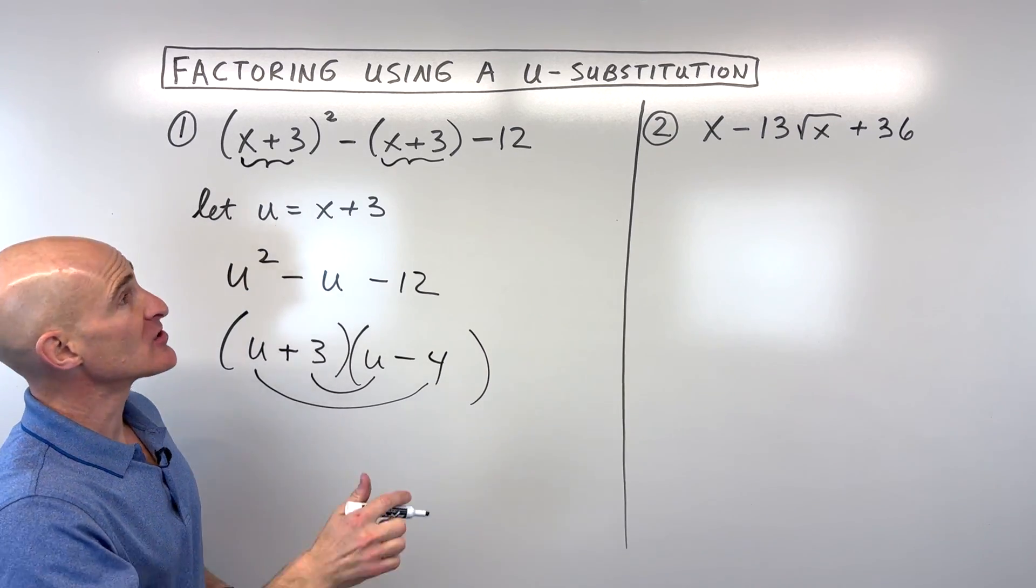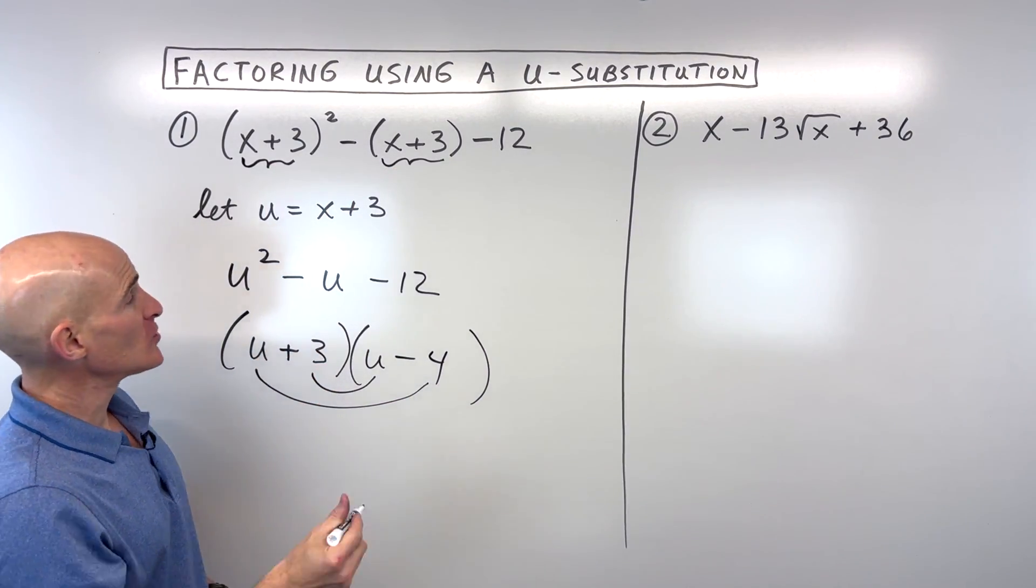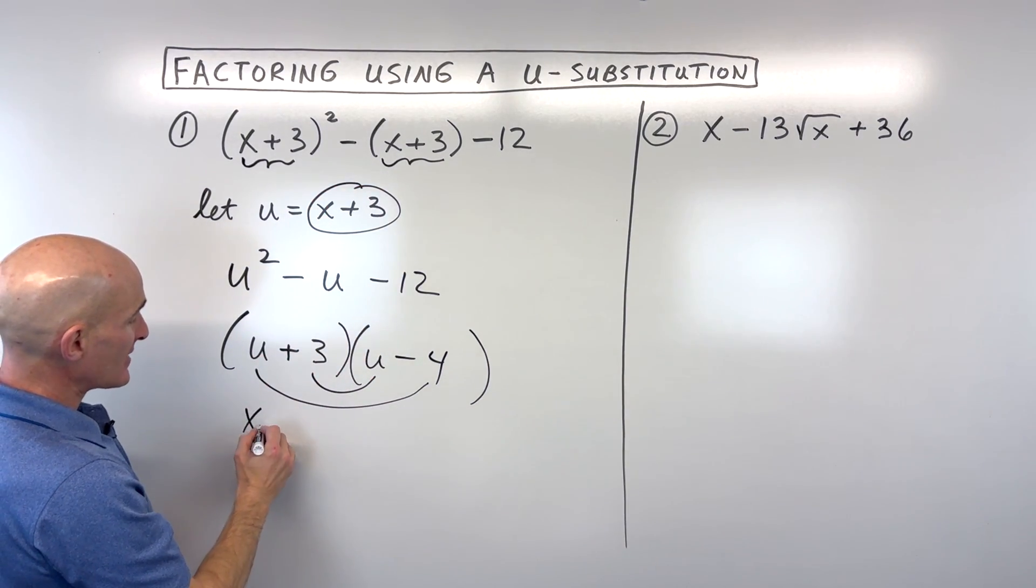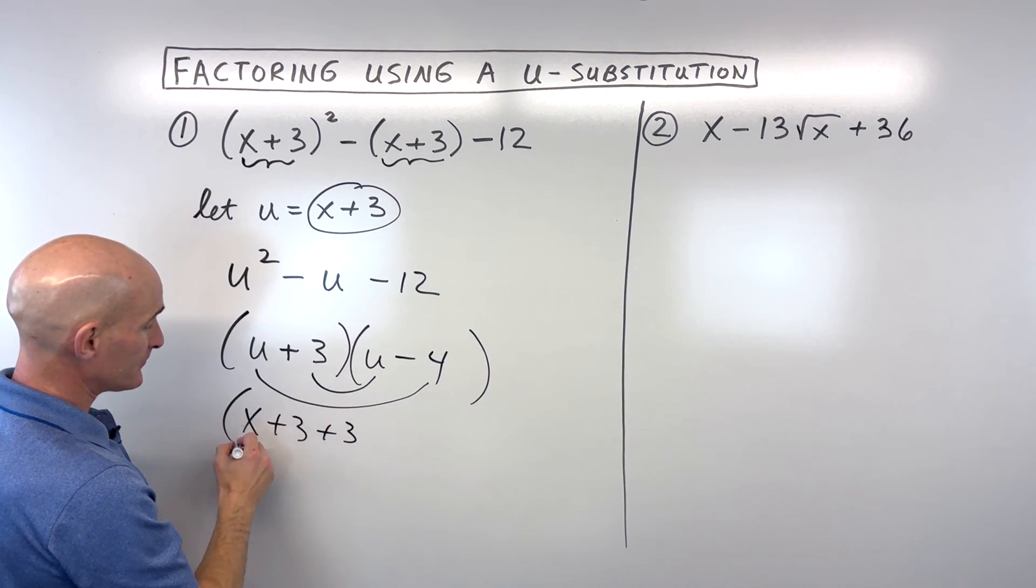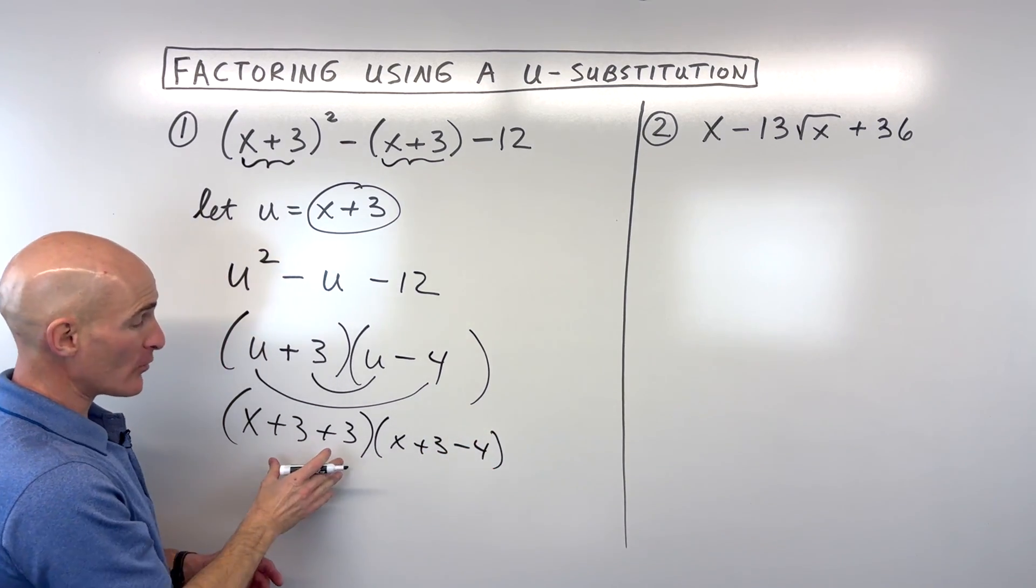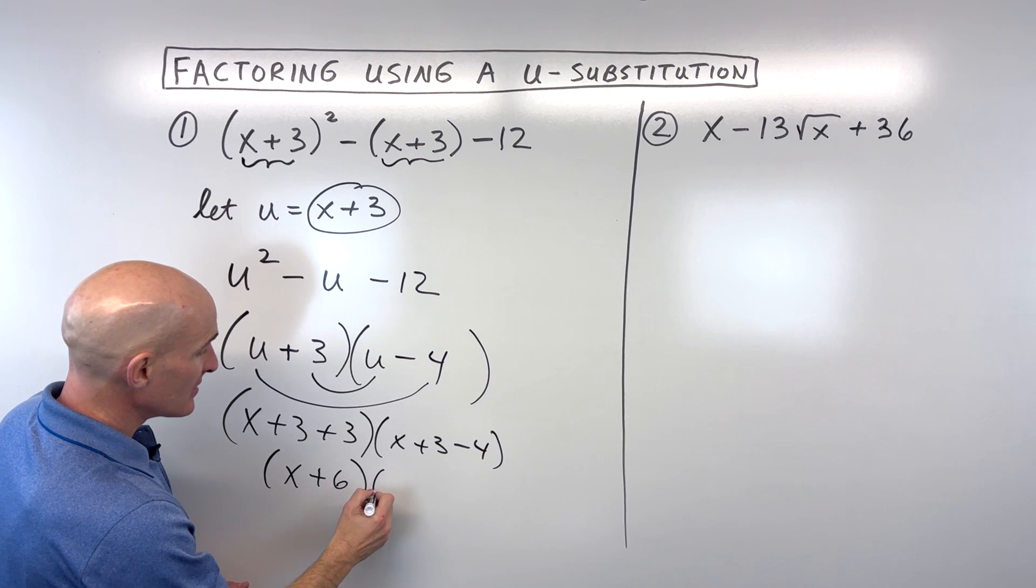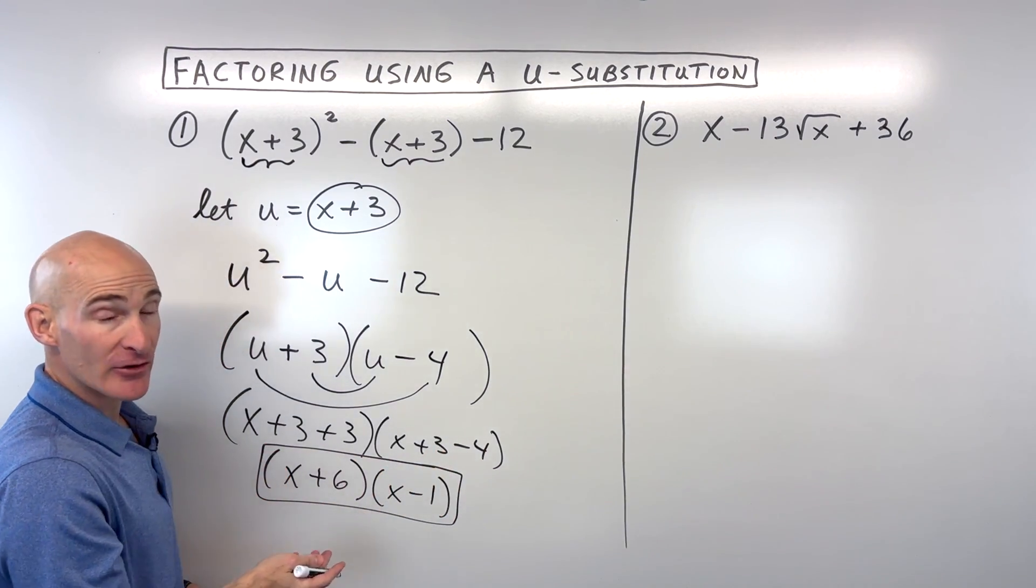But we don't want to stop there because you can see our original variable is x, not u. So what we have to do is we say, if u is equal to x plus 3, let's put that back in place of u. So that's going to be x plus 3 plus this 3 here, and we've got x plus 3 minus 4. Now I would simplify this down a little bit. This is going to be x plus 6 times x minus 1, and now we have it completely factored.